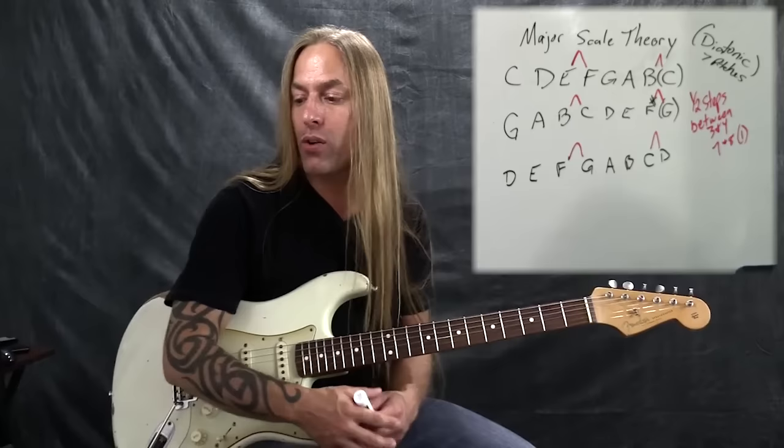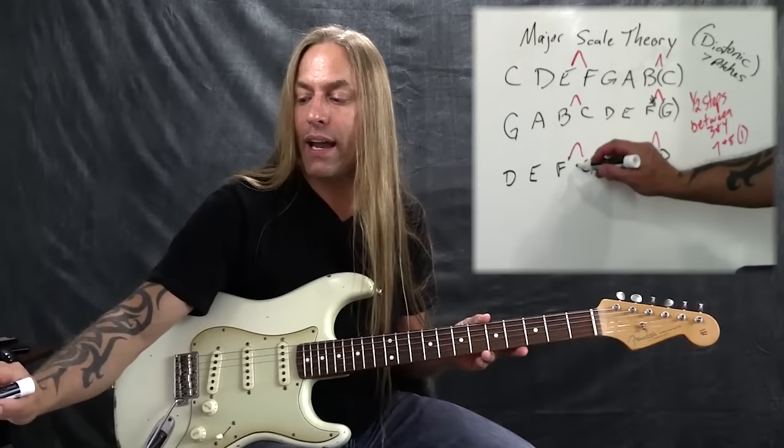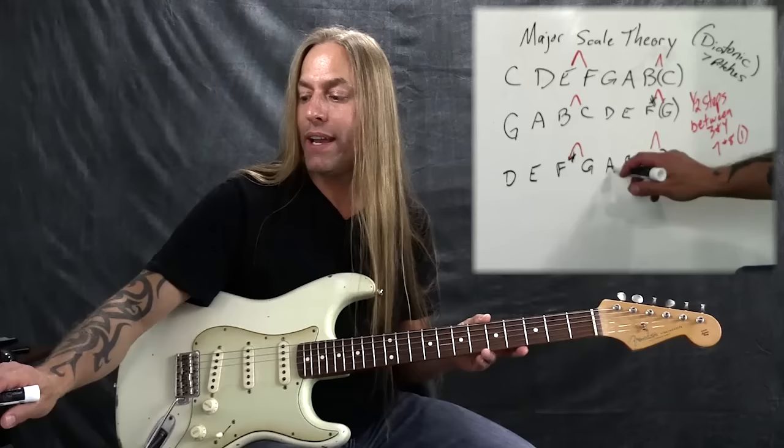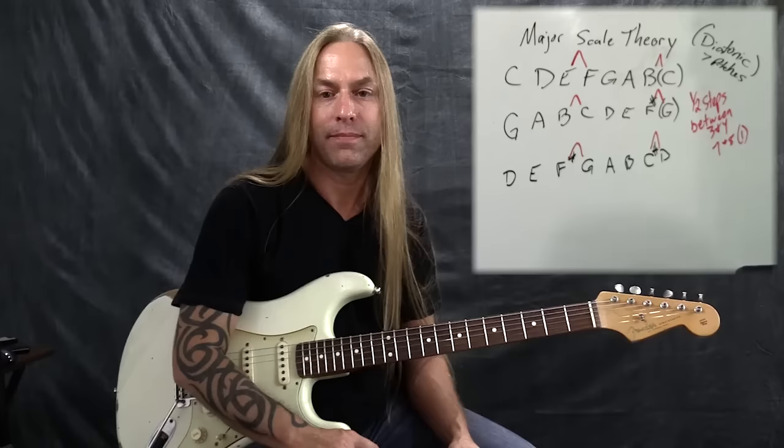D to E is a whole step — correct. E to F is only a half step, so we raise that up to F sharp — now we've got the whole step, and that fixes the half step on the other side. G to A is a whole step. A to B is a whole step. B to C is only a half step, so we bump that up to C sharp — whole step to half step. The key of D has two sharps. And that's why.